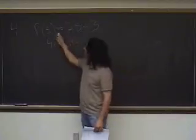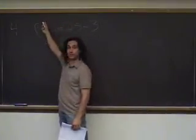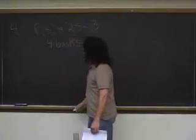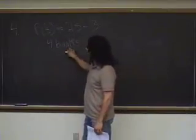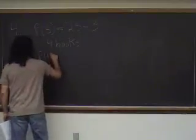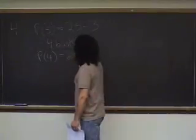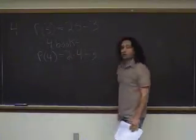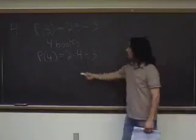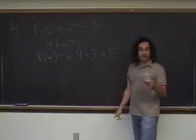Well, the way this function works is you stick in the number of books here and it pops out the profit. So notationally, what we can do to get the profit from four books is compute P of 4. In other words, 2 times 4 minus 3, or 8 minus 3, which is 5.